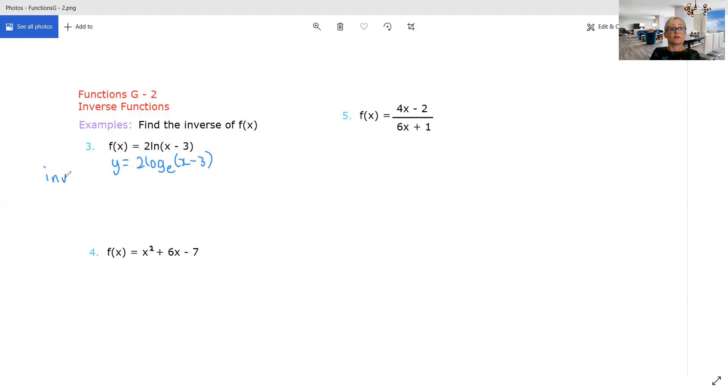So for our inverse, obviously we're swapping. Don't forget your 2. Divide by 2. Then I would go obviously from that to index notation. So y minus 3 is e to the x on 2. So y is obviously e to the x on 2 plus 3. So that's obviously your f inverse.